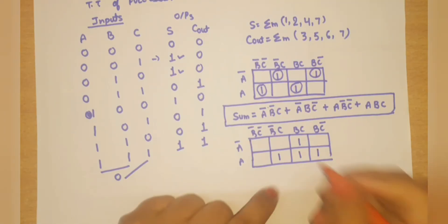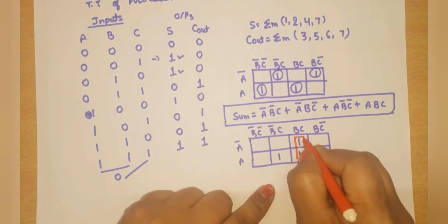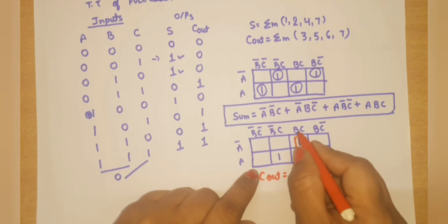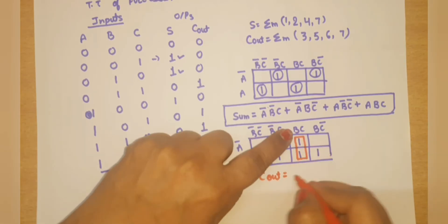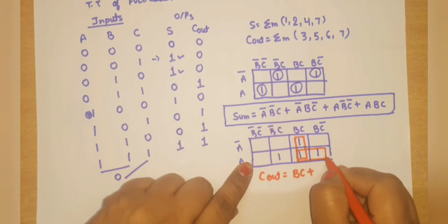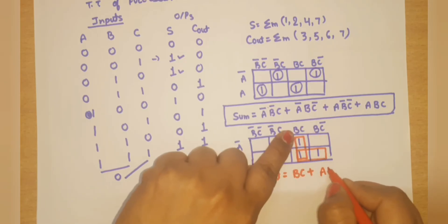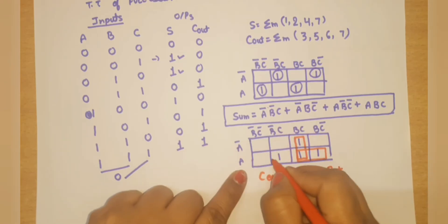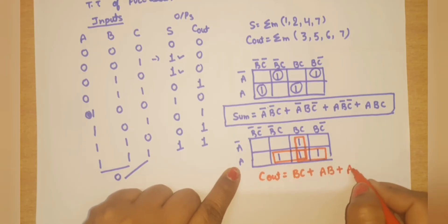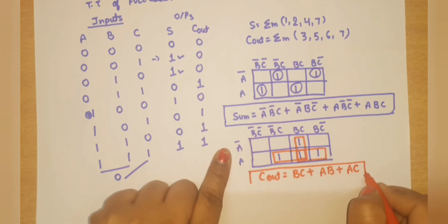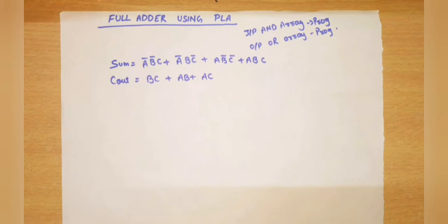Now for Carry Out on the K-map. First pair — both rows are involved, so from the column we get B·C. Second pair — from the row we get A, and from the two columns the common value is B, giving A·B. One more pair — from the row A and from the two columns the common value is C, giving A·C. So C_out = B·C + A·B + A·C.